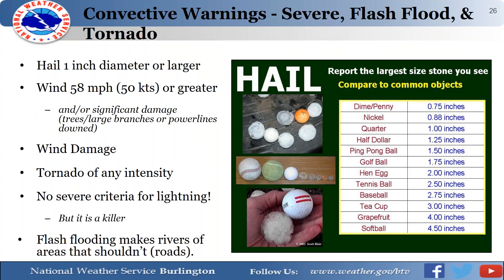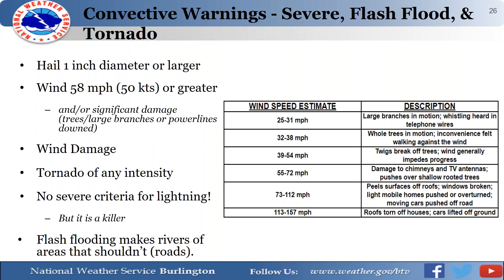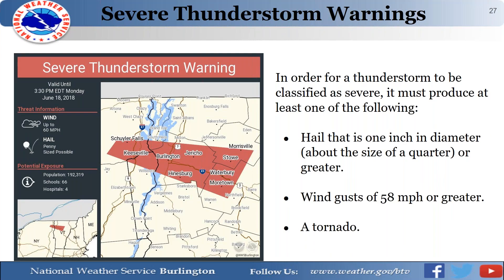Flash flooding is not covered under a severe thunderstorm warning — we issue a separate flash flood warning for that. Flash flooding causes rivers and normally dry areas to rise rapidly, forming rivers in roads and flooding houses. A flash flood warning indicates a rapid rise in water has led to or will lead to flooding over the warned area. Even after rainfall ends, water running off the mountains and elevated terrain can continue to flood lower-lying areas.